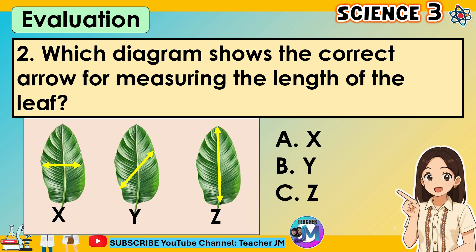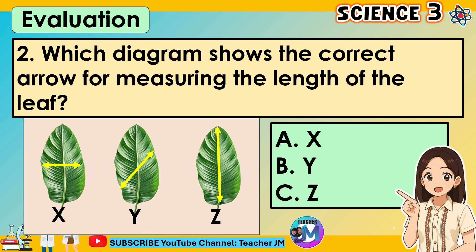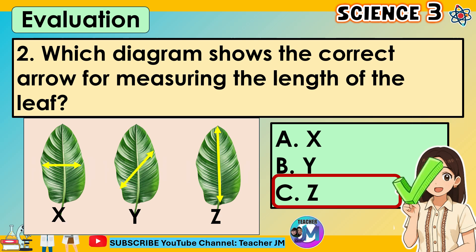Question 2: Which diagram shows the correct arrow for measuring the length of the leaf? A. X. B. Y. C. Z. The correct answer is letter C.